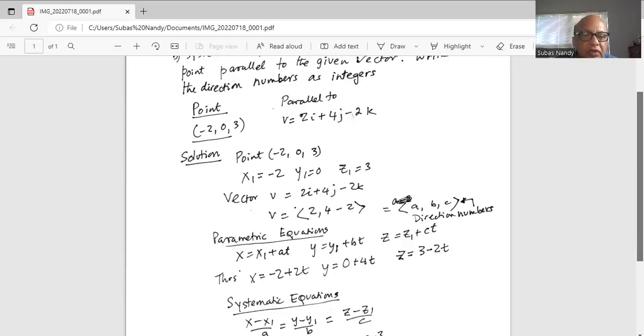So x1 is equal to minus two. So x is minus two plus 2t, and y is y1 plus bt. So y1 is zero, zero plus b is four, zero plus 4t which is 4t. And for z, it is z1 plus ct. z1 is three and c directional number is minus two. So it is three minus 2t.